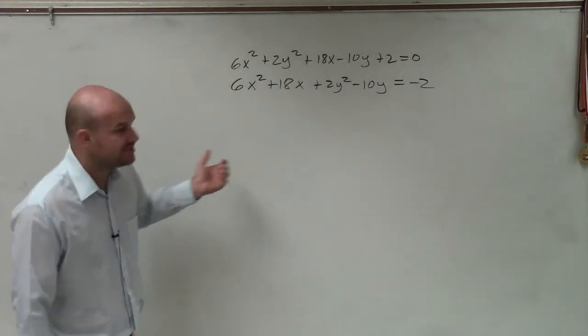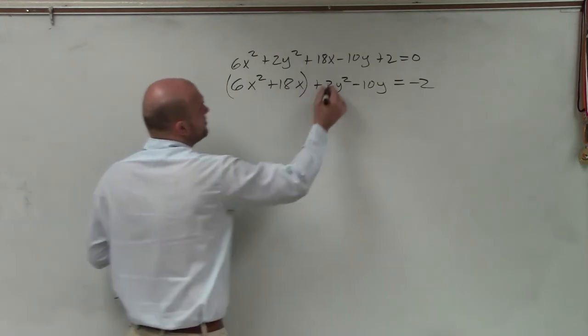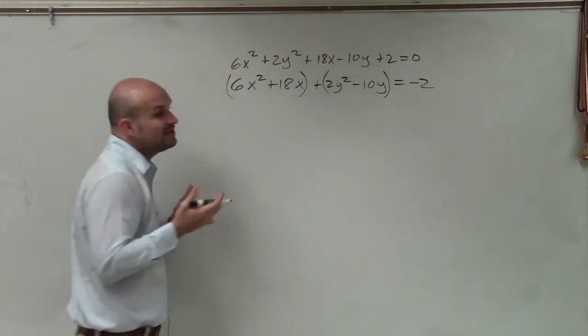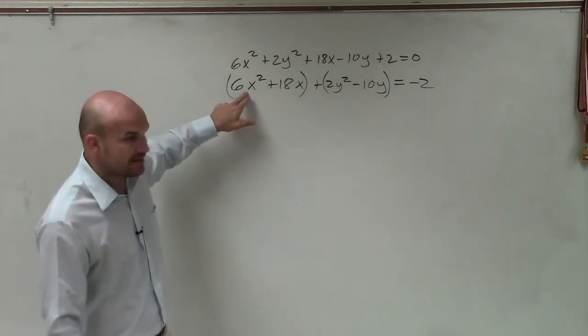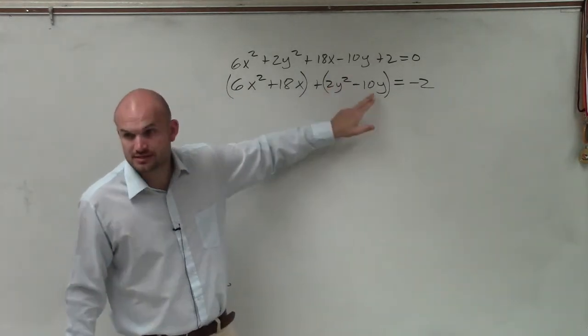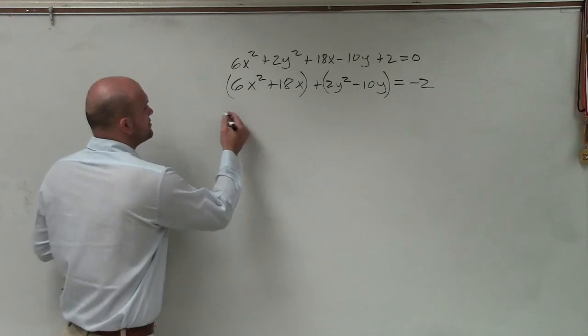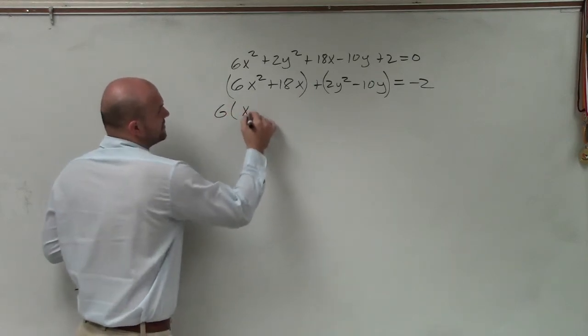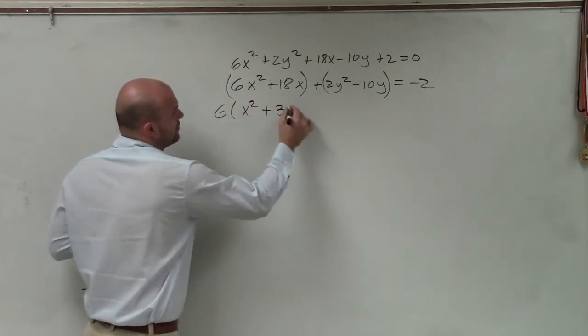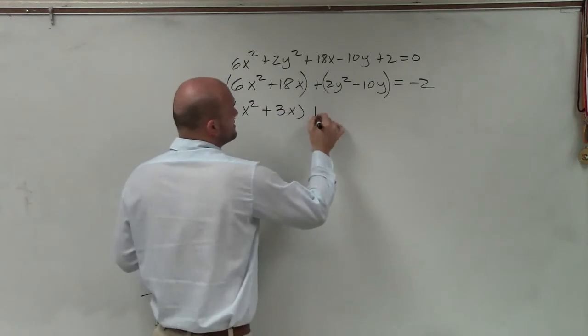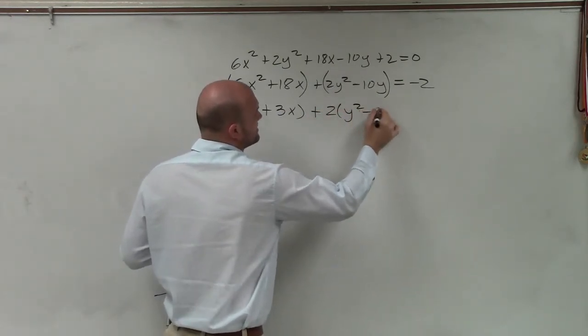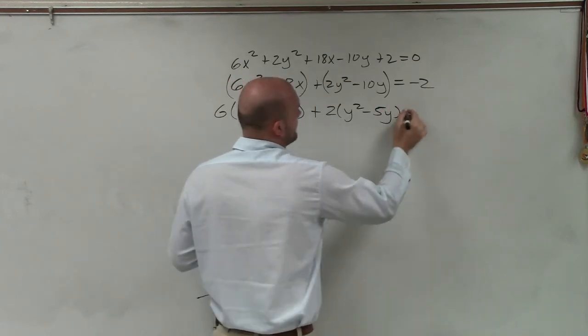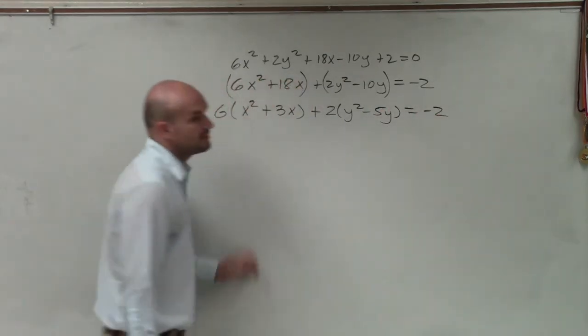So the next thing, I need to complete the square for both of these. So I'm just going to put parentheses around both of these. To complete the square, I need to make sure I factor out my a in each one of these quadratics. So in this case, I'll factor out a 6. So I'm left with x squared plus 3x. In this case, I'll factor out a 2, y squared minus 5y equals negative 2.